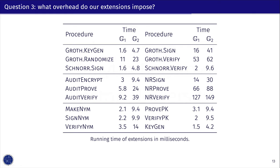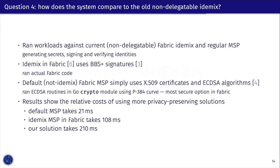Third, what overhead do our extensions impose? We run the routines for our extensions in isolation and report the running times. We observe that, with the exception of verification of the non-revocation handle, the extensions are fast compared to the entire credential construction and validation, and the entire transaction processing overhead. Fourth, how does the system compare to the old non-delegatable idemix? We ran our system against the older idemix currently used in Fabric and against the plain X.509 protocol in a non-idemix version. We report that it takes five times more time to generate a proof of anonymous credential than the plain one, and then just twice as much to have a delegated credential.